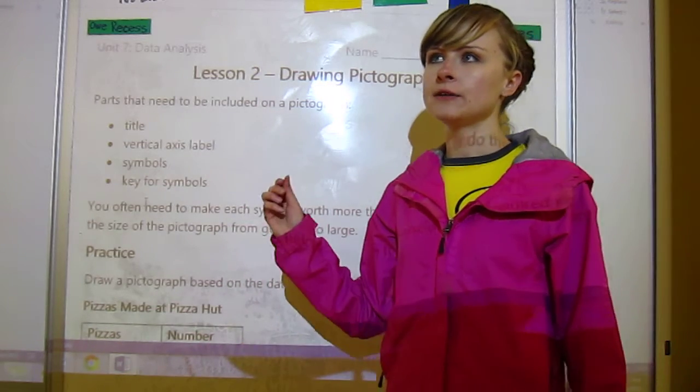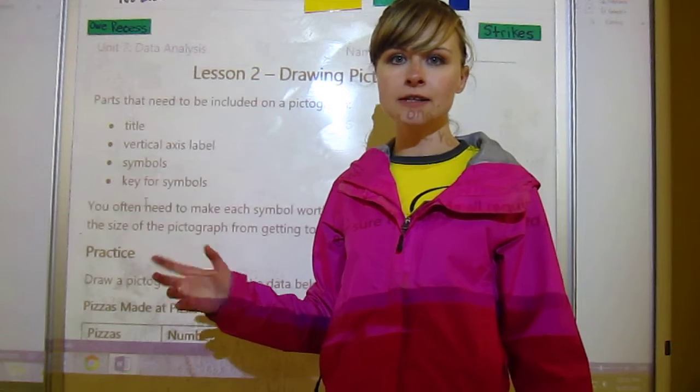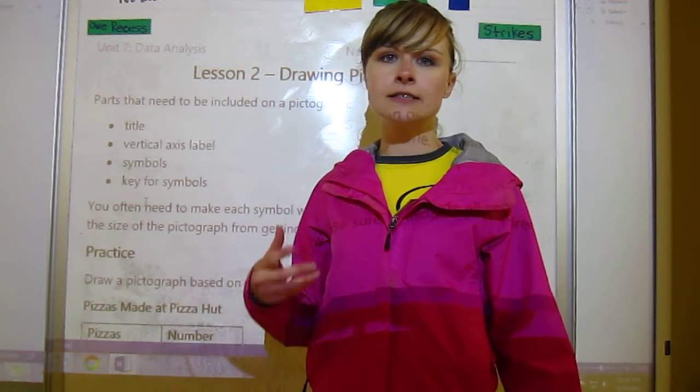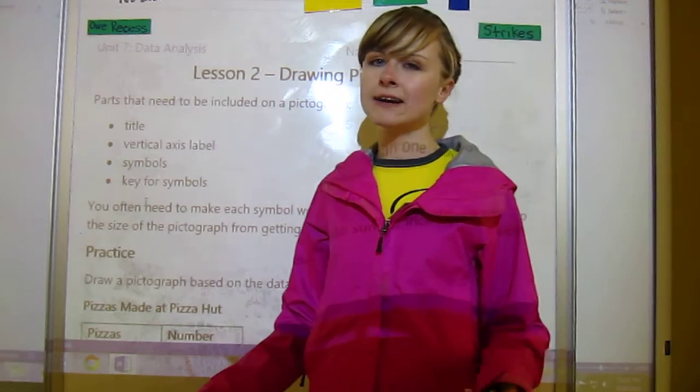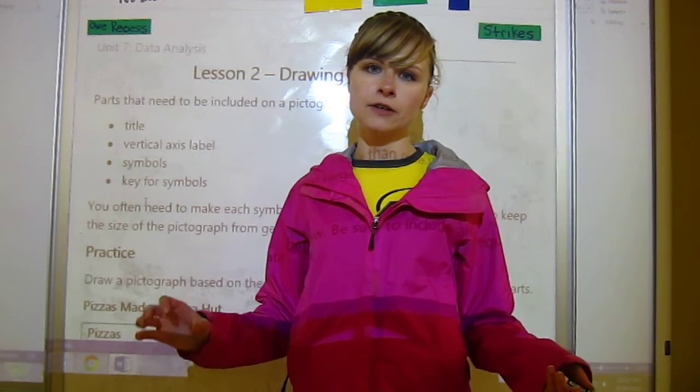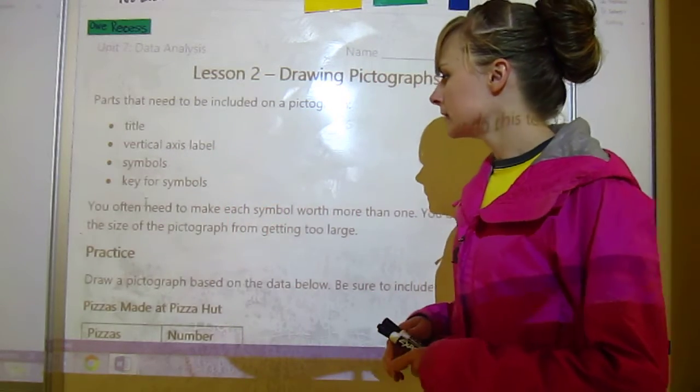Part of this is deciding on what the symbols should represent and it should be logical so that you can draw it easily. You don't want four eighths or four fifths of an ice cream cone - that's kind of hard to draw and it's difficult to tell how much that really is. You don't want to have more than half of a picture - you have a full picture or half a picture, but not a different fraction.